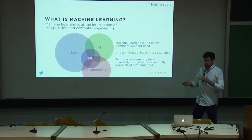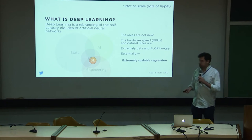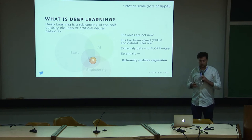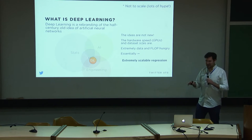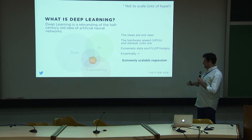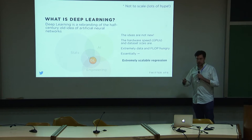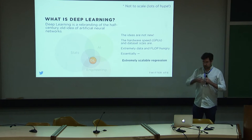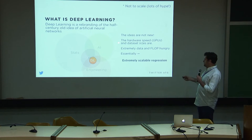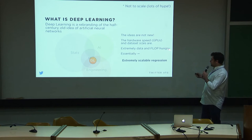Deep learning is a subfield inside of machine learning. The ideas are really not new — it's a rebranding of an about half-century-old idea called neural networks or artificial neural networks, not to be confused with anything that actually resembles a brain. What is new is really fast hardware: GPUs are what unlocked this new phase of resurgence of neural networks, along with gigantic data sizes. ImageNet is a huge dataset, and AlexNet's breakthrough performance in 2010 put neural networks back on the scene because of giant data and really fast GPUs.